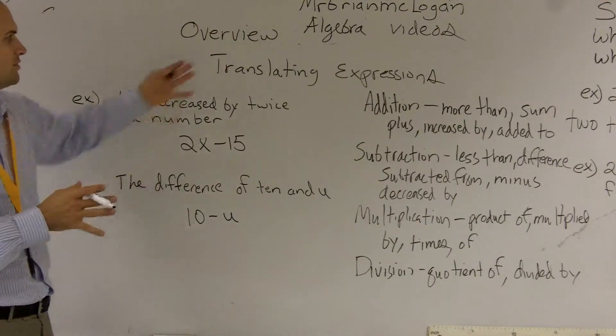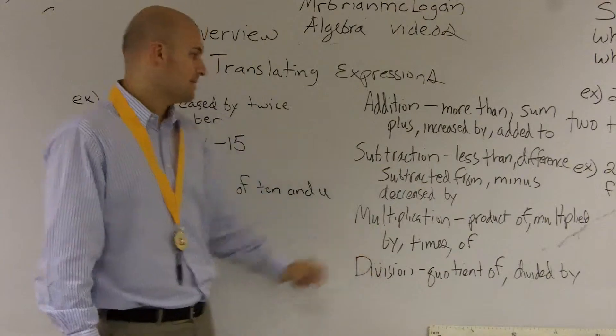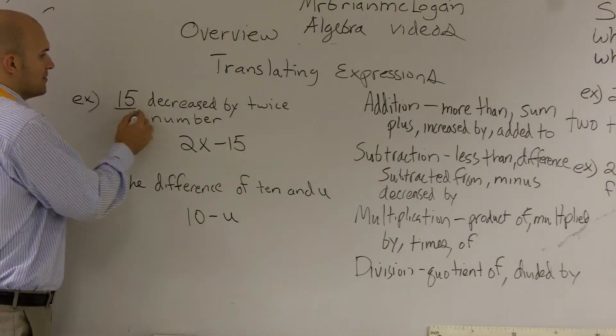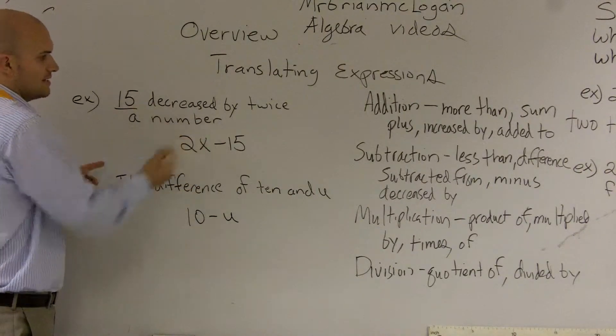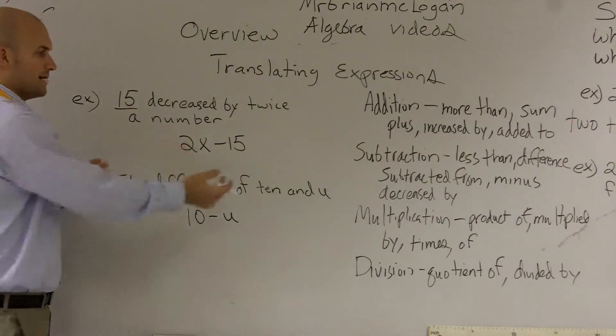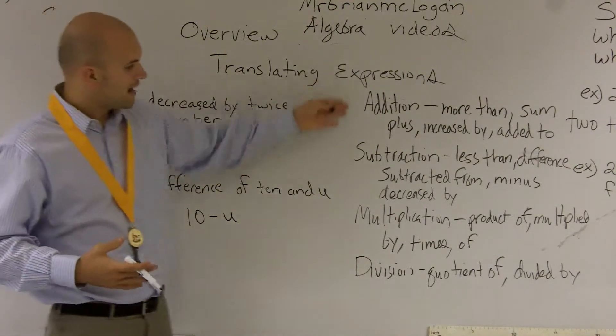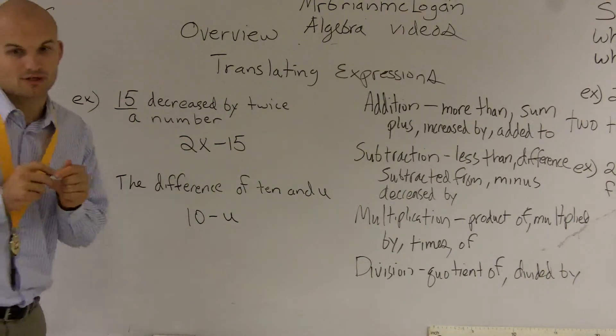So just a couple things for translating expressions. Just make sure when you guys are doing these, you're looking for what the signal words are and then how you can write them in. The basic case is just remember when you have a number, that's going to be a part of your verbal expression. Or when they're saying a number or a variable, you've got to make sure you write that in as well. And then from there, you just need to determine what operation they're asking us to do. So that's a quick demonstration of how you do translating expressions.